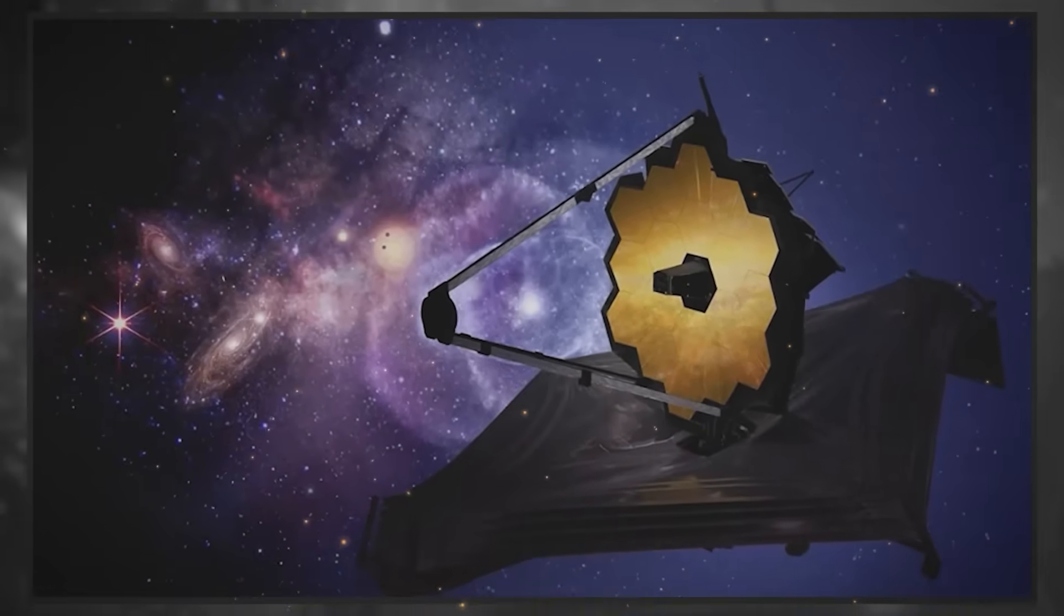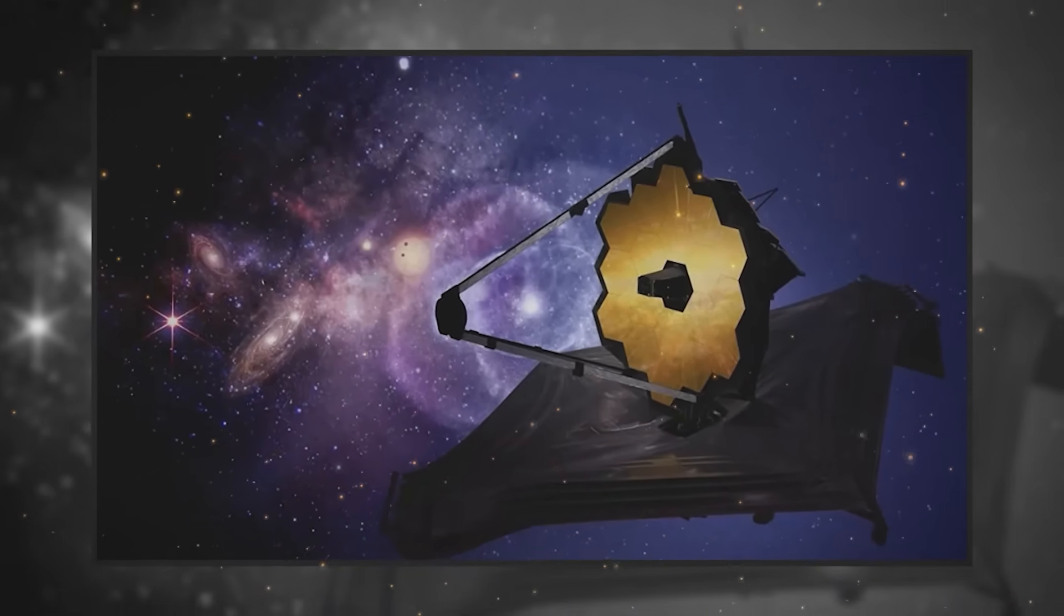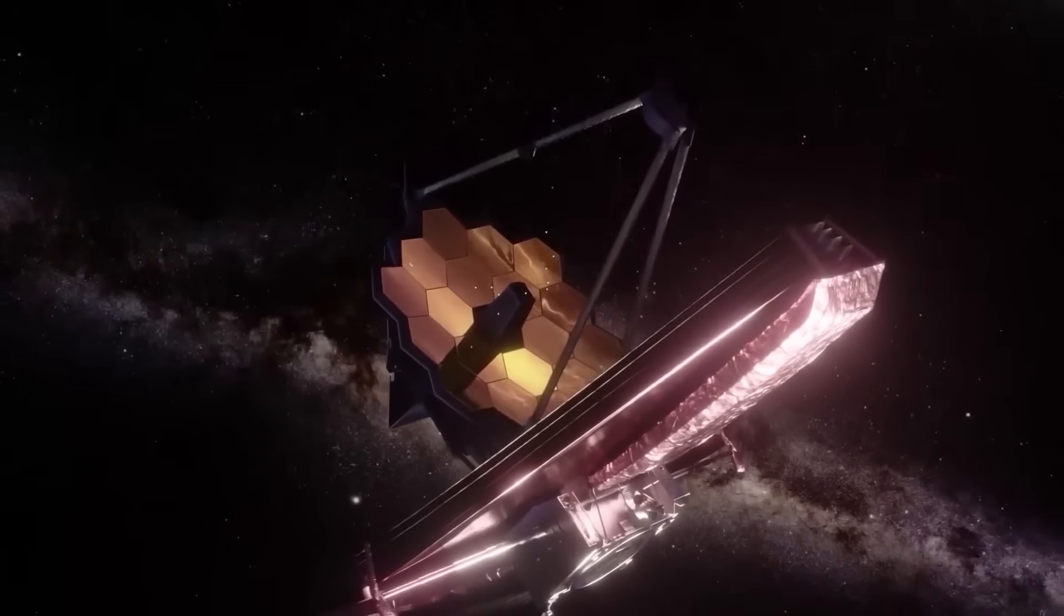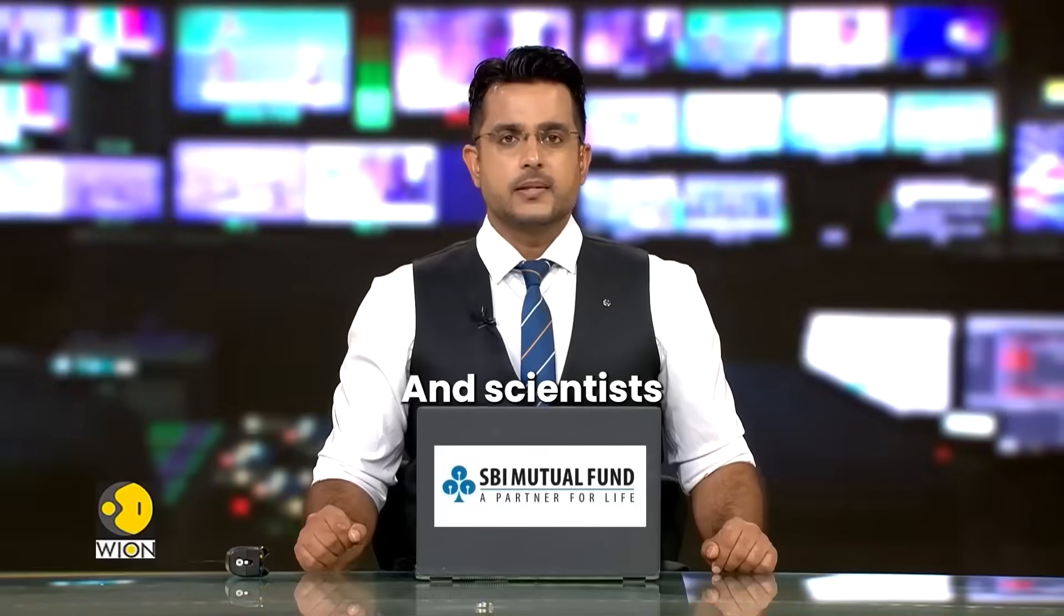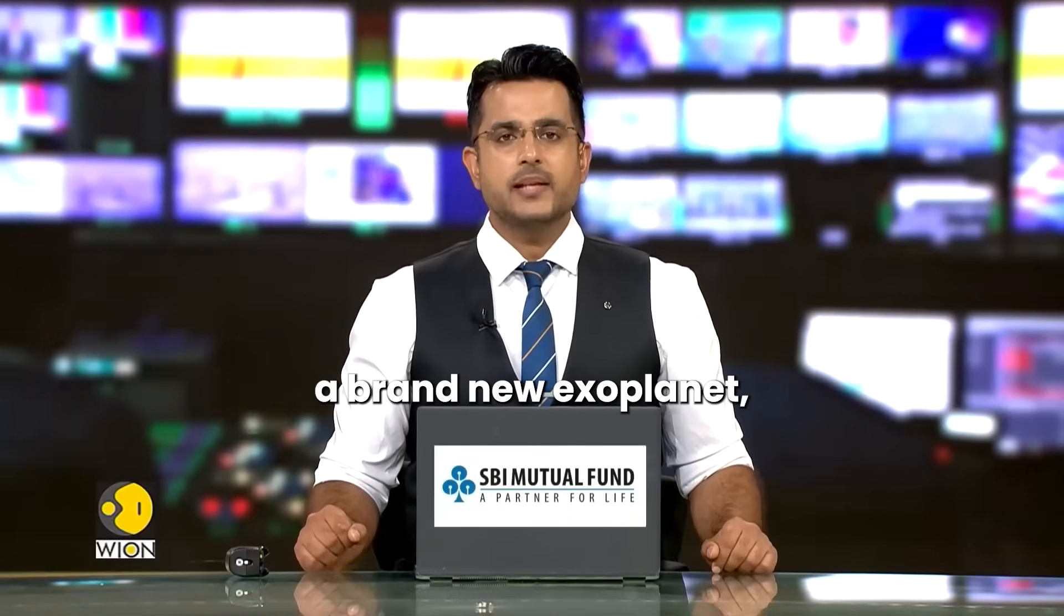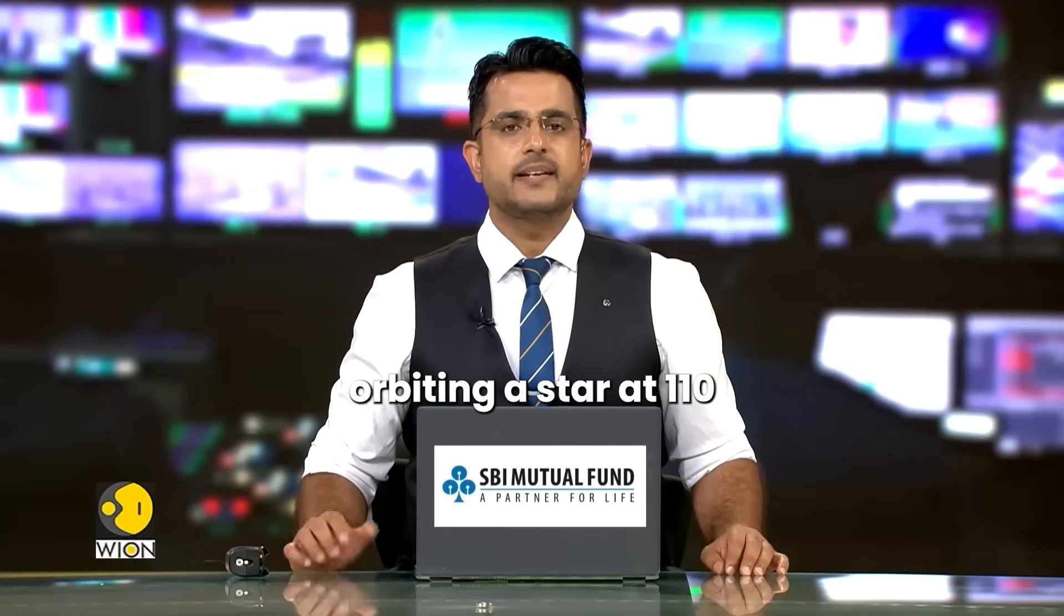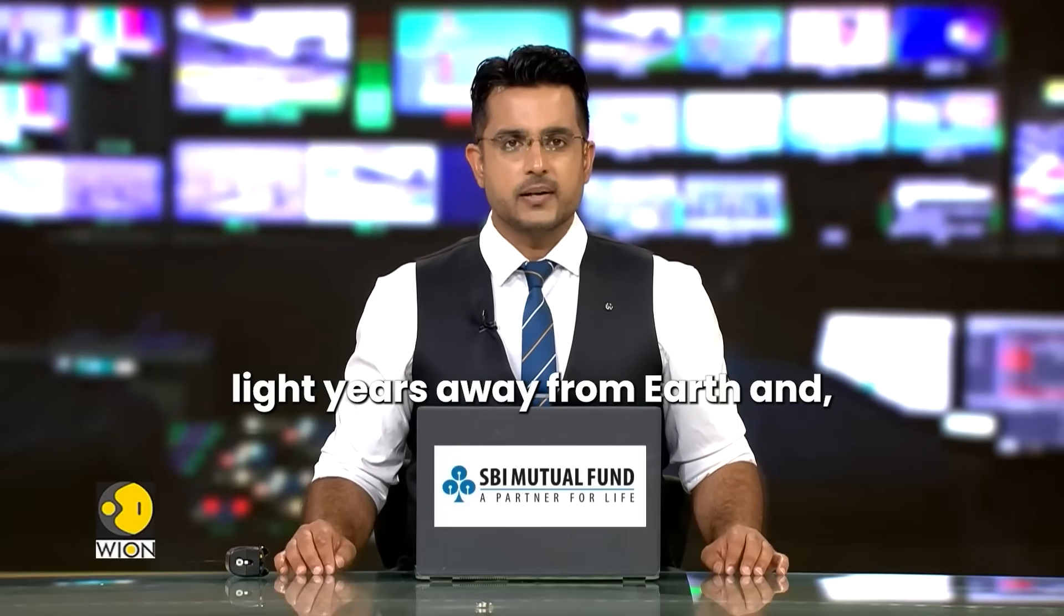The James Webb Space Telescope has done something no other telescope has before. It captured a direct picture of a brand new world orbiting another star. Scientists have discovered a brand new exoplanet. They say planet TWA-7b was found orbiting a star 110 light-years away from Earth.